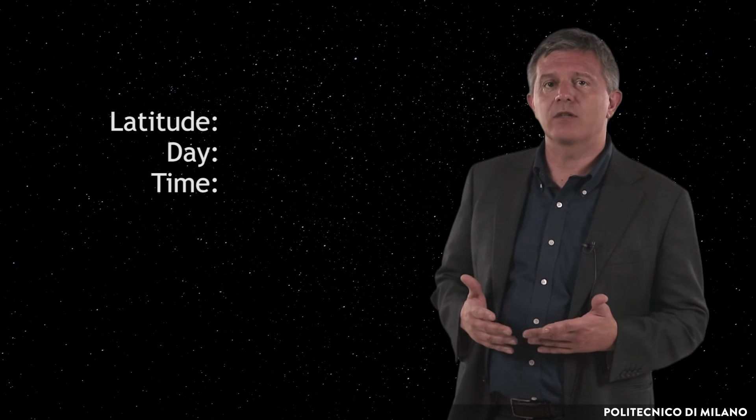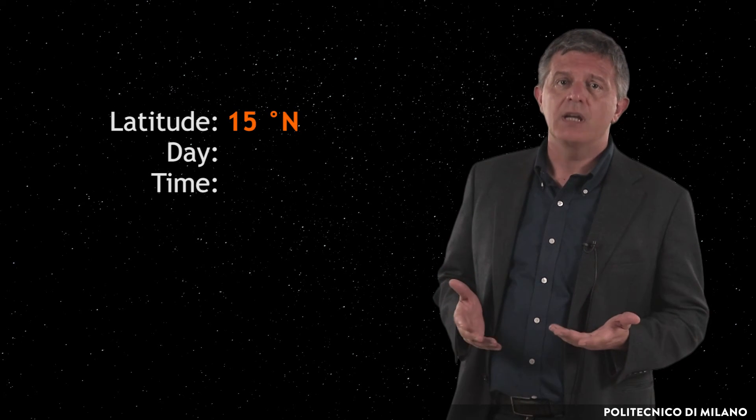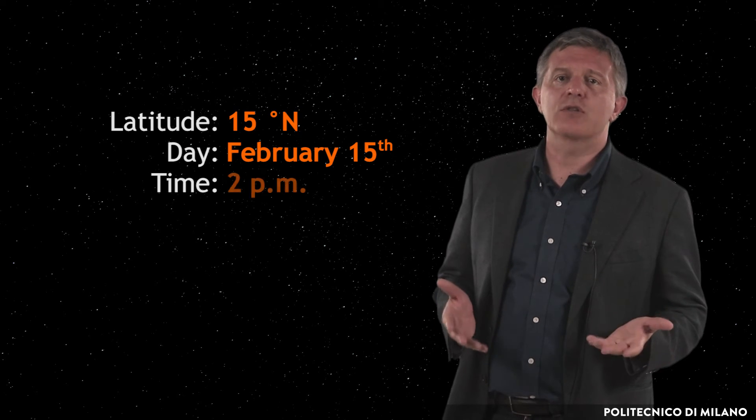Let's refer to an example to understand how polar diagrams work. We want to know what is the apparent position of the Sun in a place located at latitude 15 degrees north in the average day of February at 2 pm.